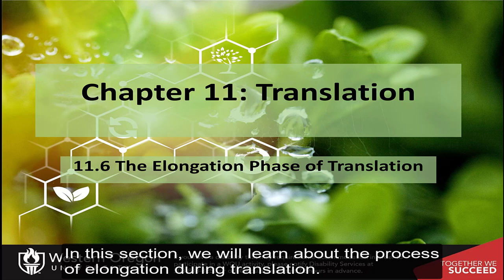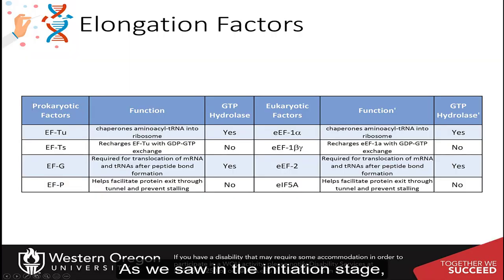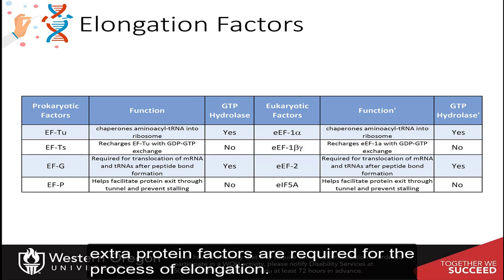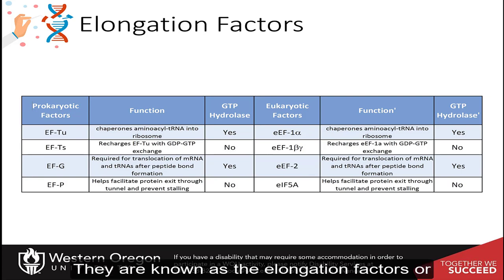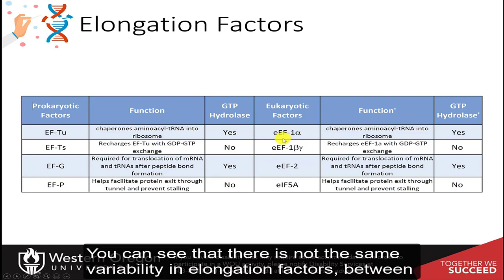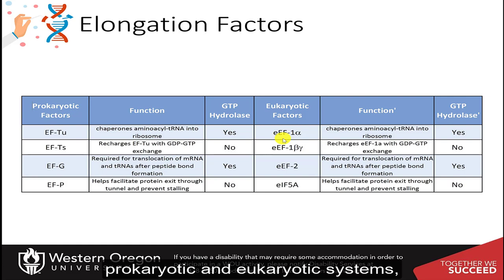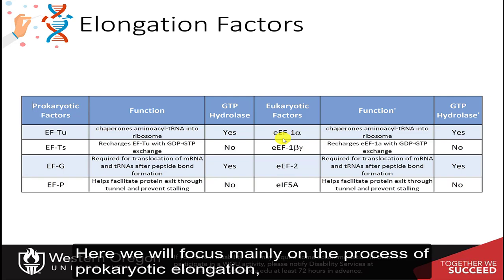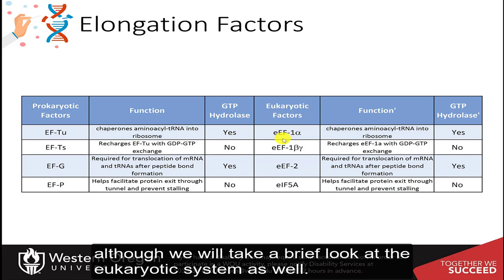In this section, we will learn about the process of elongation during translation. As we saw in the initiation stage, extra protein factors are required for the process of elongation. They are known as elongation factors, or EFs in the prokaryotic system and EEFs in the eukaryotic system. There is not the same variability in elongation factors between prokaryotic and eukaryotic systems as there was with the initiation phase. Here we will focus mainly on the process of prokaryotic elongation, although we will take a brief look at the eukaryotic system as well.